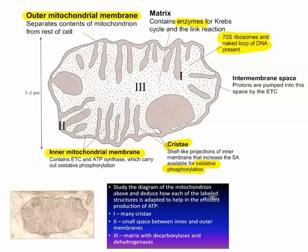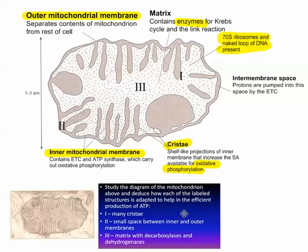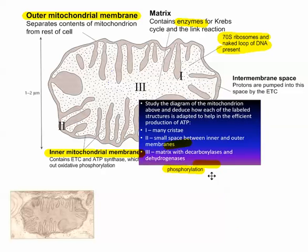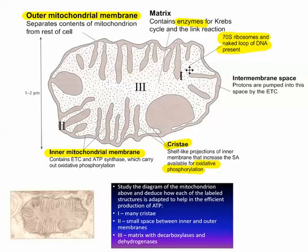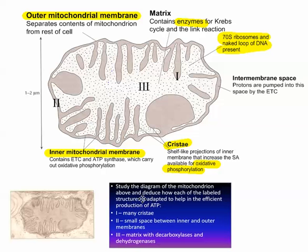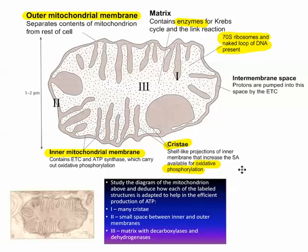That overall is the structure of the mitochondria. If I turn this into a question, you can see Roman numeral I, Roman numeral III, and Roman numeral II, which refers to the small space in between. Take a look at this diagram and you can see a few extra structure-related-to-function points. That is the structure of a mitochondrion.